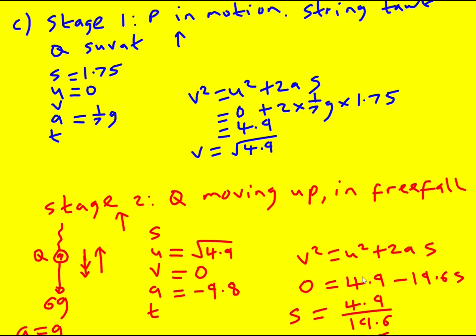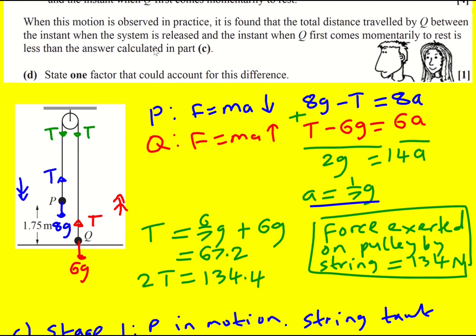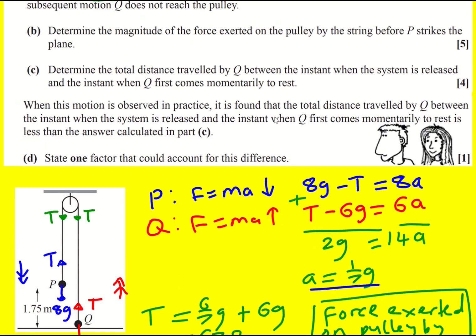And they've chosen the numbers really carefully because we just get 0.25. So in stage one, it moved 1.75 meters. Stage two, it moved 0.25 meters. Therefore, overall, it's going to move 2 meters.